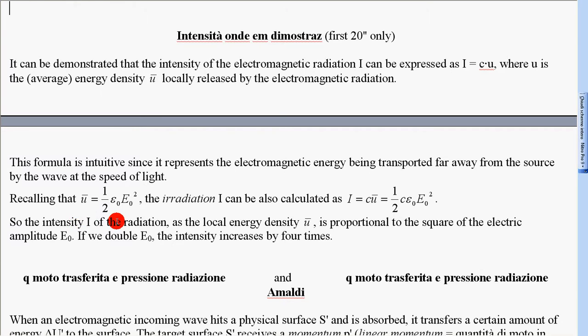The intensity I of the radiation, as the local energy density U, is proportional to the square of the electric amplitude E zero.